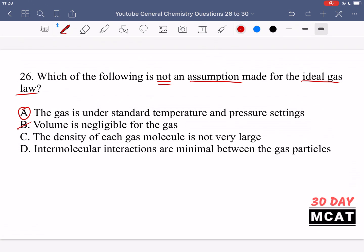Option C is saying the density of each gas molecule is not very large. Yes, this is also true. Option D is saying intermolecular attractions are minimal between the gas particles. Yes, so B, C, and D are key assumptions with the ideal gas law.